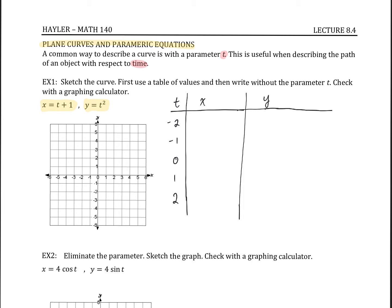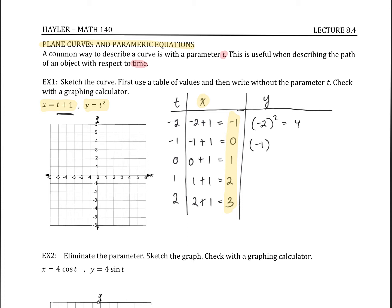Since x equals t plus 1: for t = −2 we get −1, for t = −1 we get 0, for t = 0 we get 1, for t = 1 we get 2, and for t = 2 we get 3. For y equals t squared, we square each t value: giving 4, 1, 0, 1, and 4 respectively. So our (x, y) points are (−1, 4), (0, 1), (1, 0), (2, 1), and (3, 4).